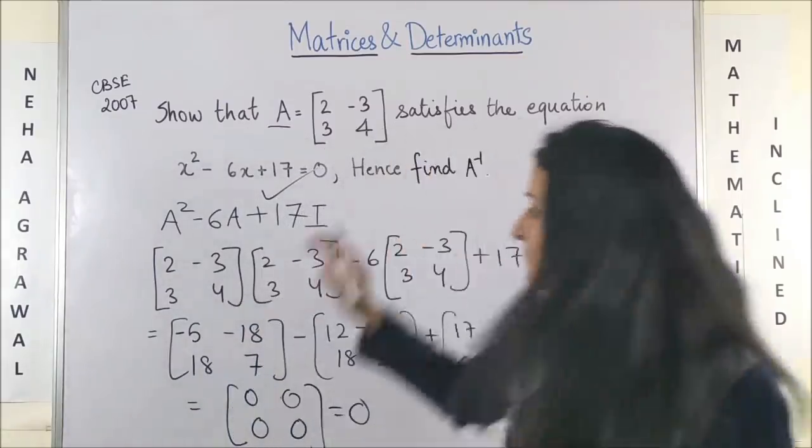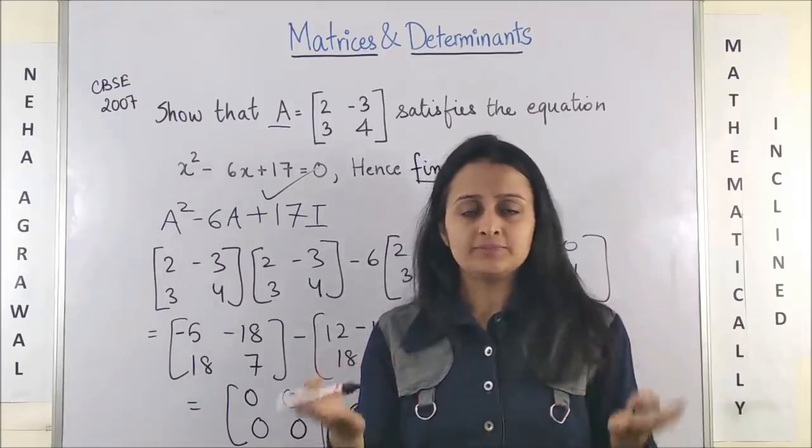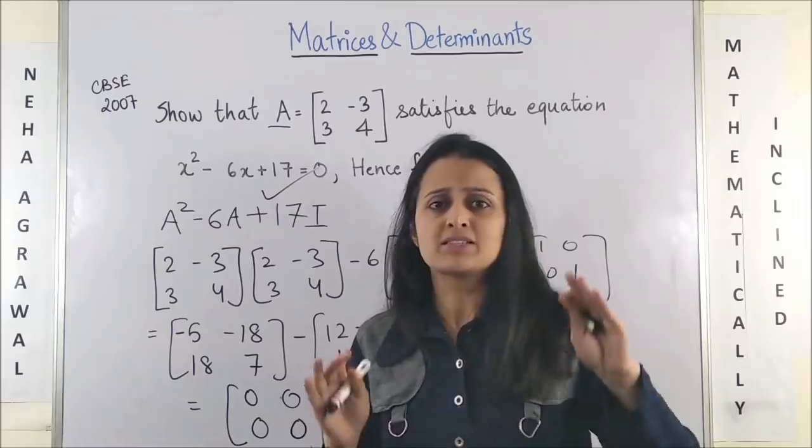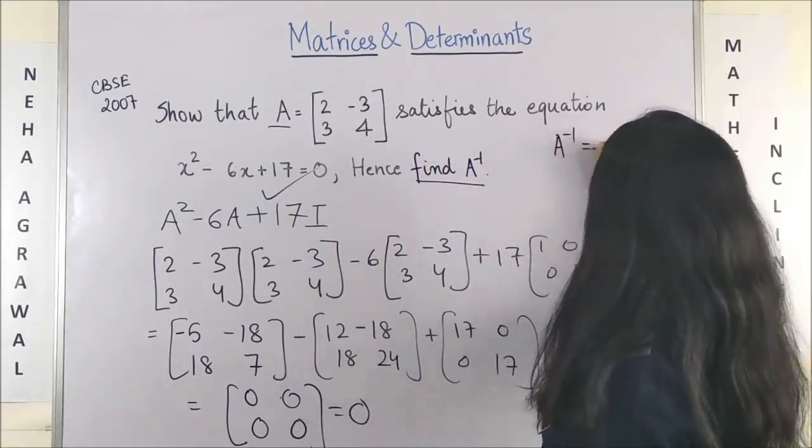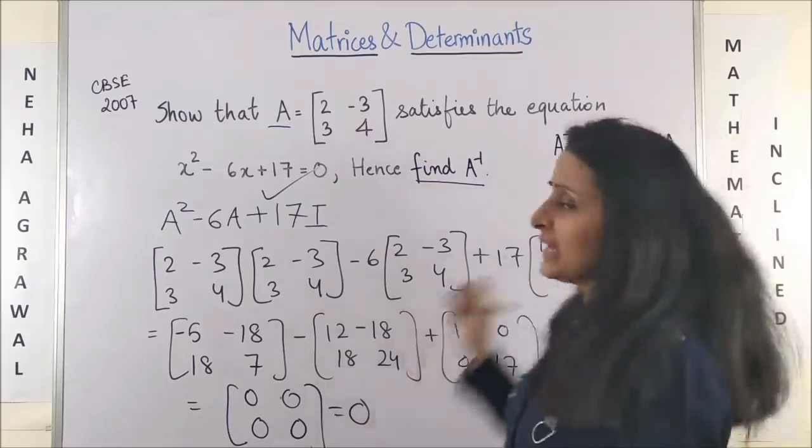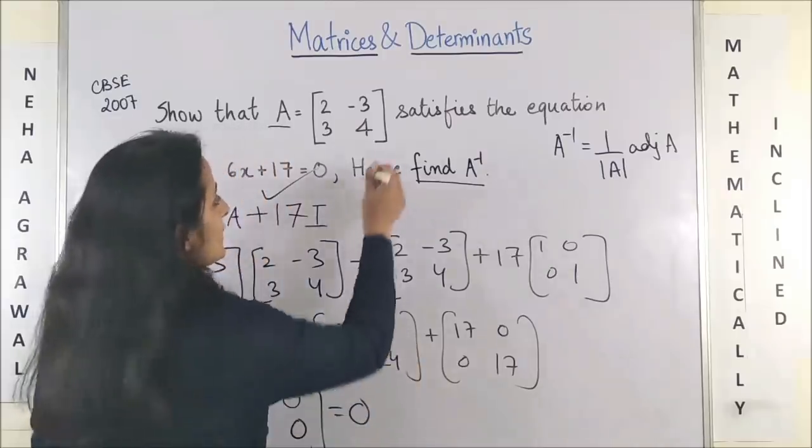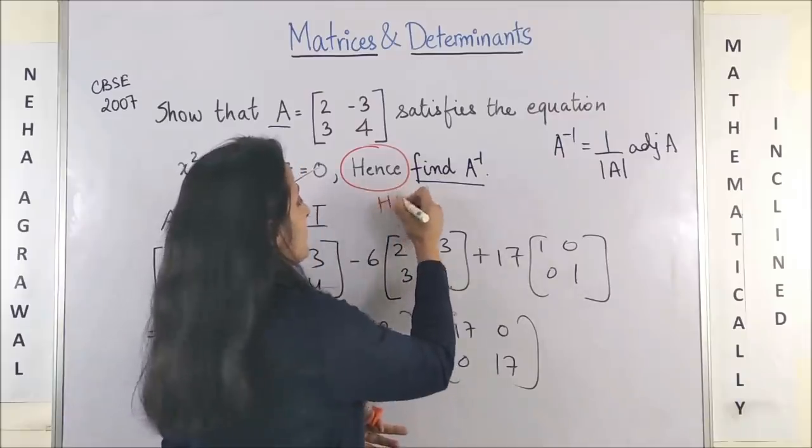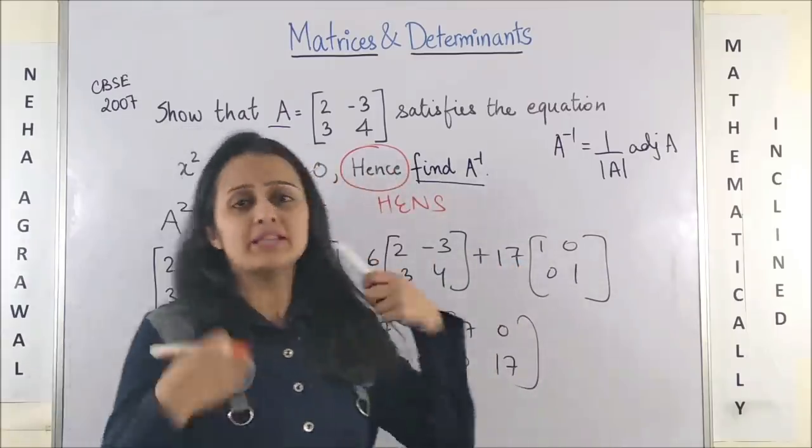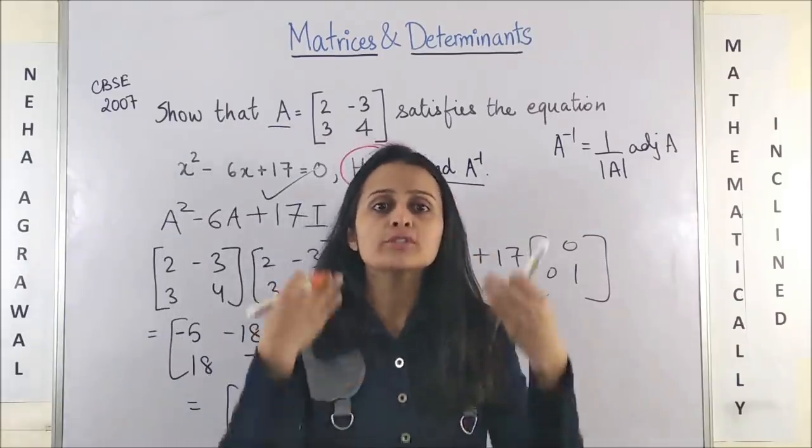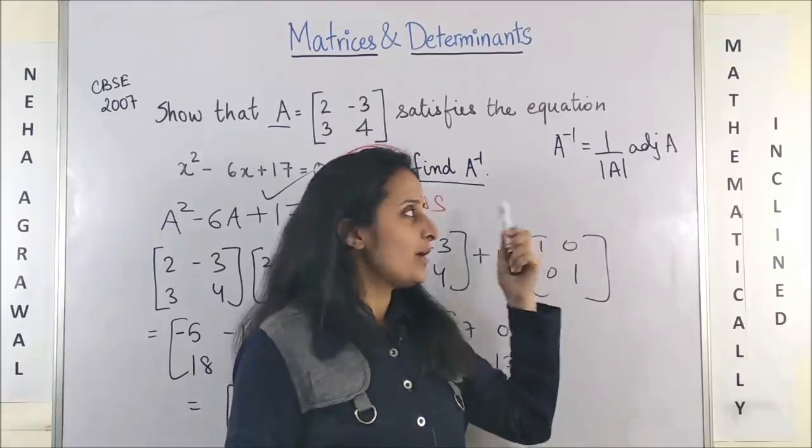Now what happens? Obviously all of you get this answer right. When it comes to finding A inverse, what is the biggest mistake you do here? Most students start with their usual A inverse equals one upon determinant of A into adjoint of A. Don't do that. So what are we supposed to do? Your word is 'hence'. Please, this is very important. Hence basically means in the question that whatever you have proved, use that to find A inverse.